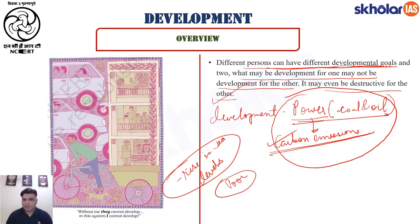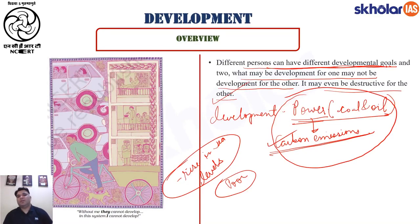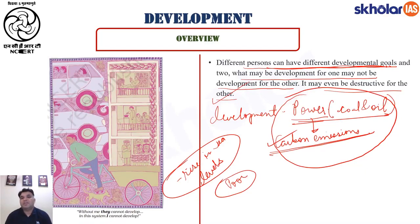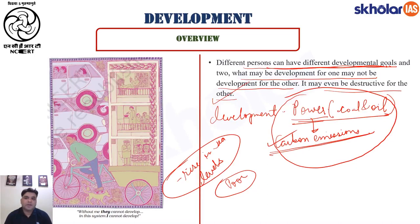Development can assume different definitions for different people — this is very important. For a person who belongs to the middle class, development means timely electricity, availability of cheap and continuous power, and availability and accessibility of potable drinking water. But for a poor person, development might mean the ability to have two square meals per day, just having adequate shelter. Development for a rich person means swanky airports, the glitz and glamour of cities, air travel, helipads. Depending on whichever class or community you belong to, your ideas of development might change.